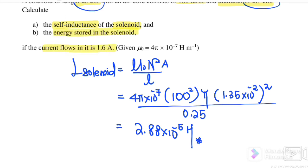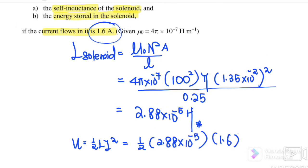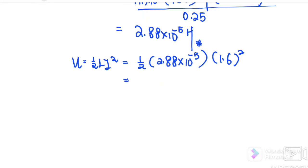Find the energy stored in the solenoid if the current is 1.6 A. Using U equals half LI²: L is 2.88×10⁻⁵ and I is 1.6 A. Therefore, the energy stored is 3.69×10⁻⁵ J. That's all for this subtopic. We will continue with 5.5 Mutual Inductance. See you in the next video — bye!